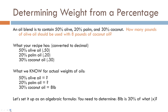Here's the type of question you might see on the Soap Guild certification test. An oil blend contains 50% olive oil, 20% palm oil, 30% coconut oil. How many pounds of olive oil should be used with 8 pounds of coconut oil? They give you part of the information and you have to figure out the rest. This is where our algebra comes in. First, write out what you know: 50% olive is something, 20% palm is something, 30% coconut — and that is 8 pounds.